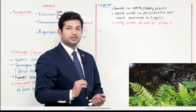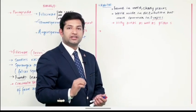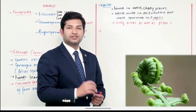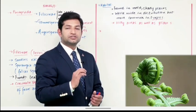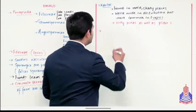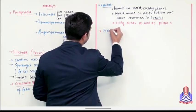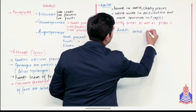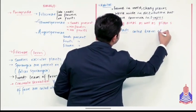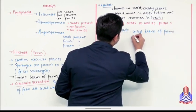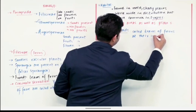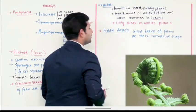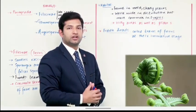फिर इसके साथ ही साथ students, एक और term - the term is fiddleheads. और fiddleheads क्या होते हैं - the coiled leaves of the ferns. Ferns के जो leaves हमें coiled form में नज़र आ रहे हैं, उस खास term को हم कहते हैं fiddlehead. These are the coiled leaves of ferns at their immature stage. All right students, तो यह हैं कुछ general features about the class Filicinae.